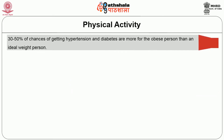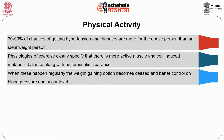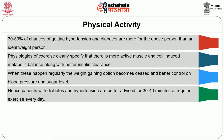Those who are obese have a 30-50% greater chance of getting hypertension and diabetes than a person of ideal weight. Exercise physiology specifies that there is more active muscle and cell-induced metabolic balance along with better insulin clearance. When these happen regularly, weight gain is curtailed and better control of blood pressure and sugar level is achieved. Hence, patients with diabetes and hypertension are advised to do 30-40 minutes of regular exercise every day, such as simple walking and other aerobic exercises, under the supervision of a medical doctor or therapist.